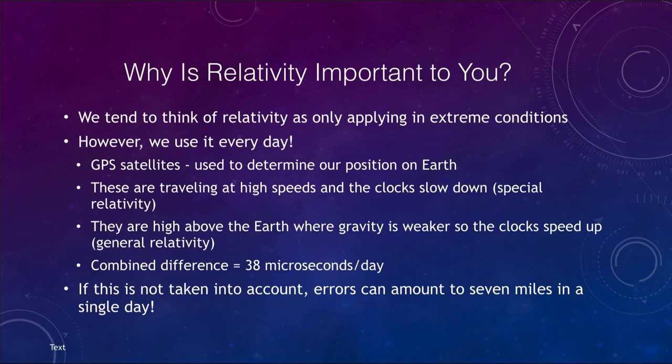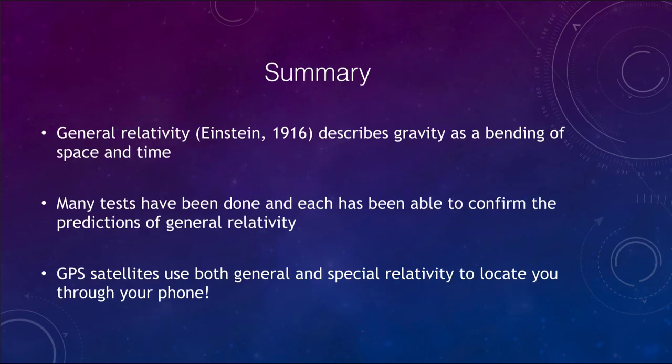So let's finish up here as we do with our summary. And what we find is that remember, general relativity given to us by Einstein in 1916, describes gravity as a bending of space and time as compared to Newton's force between two objects. Many tests have been done. And each of these has been able to confirm the predictions of general relativity. And as an example, the GPS satellites use both general and special relativity to locate you through your phone. So to find out where you are, and to be able to allow you to travel to various places using GPS on your phone, general and special relativity do need to be taken into account.